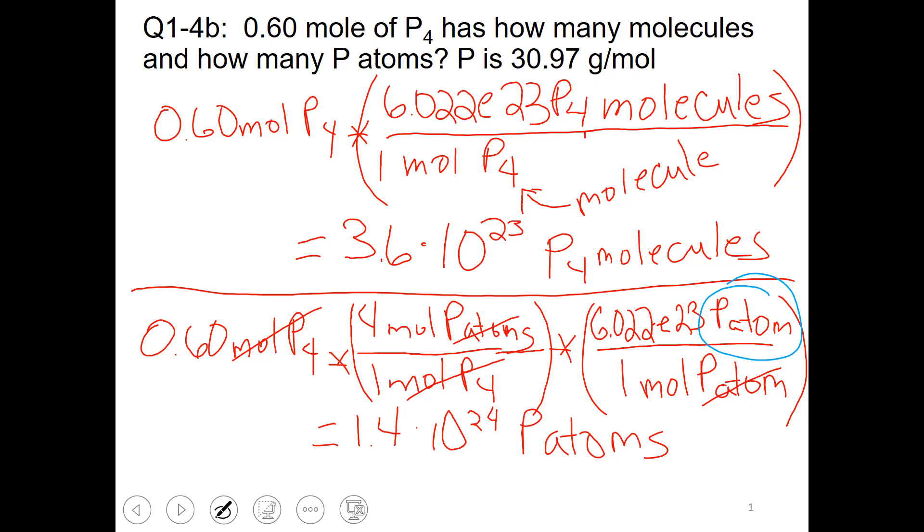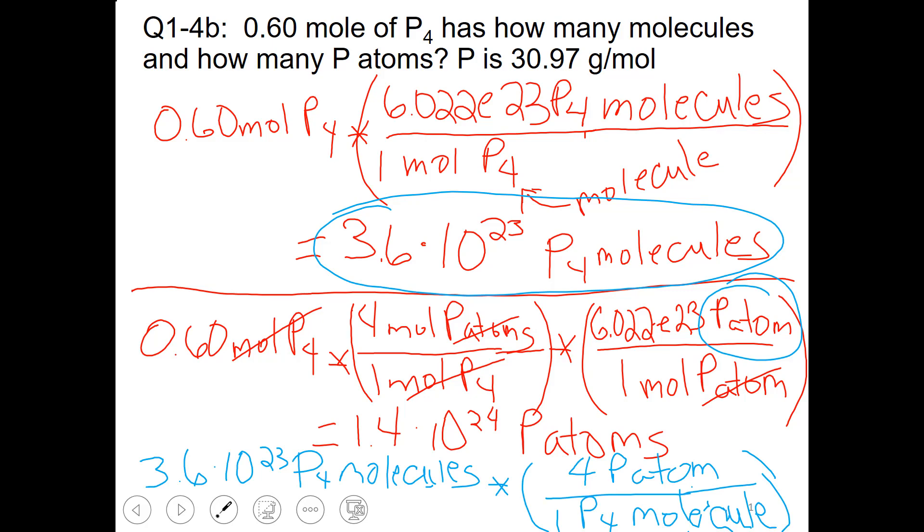There's a second way I could do the second part of this problem. I could take my first answer of 3.6 times 10 to the 23rd P4 molecules and start with that. If I started with that value and then multiplied it by this true ratio, 4 phosphorus atoms are in 1 P4 molecule. That is a true statement. If I took 3.6 times 10 to the 23rd and multiplied it by 4, guess what I would once again get?